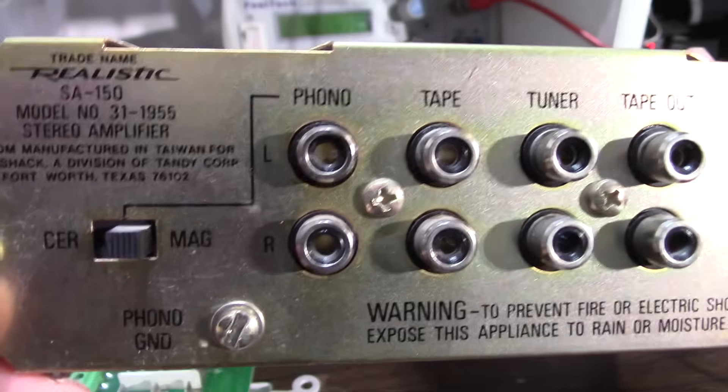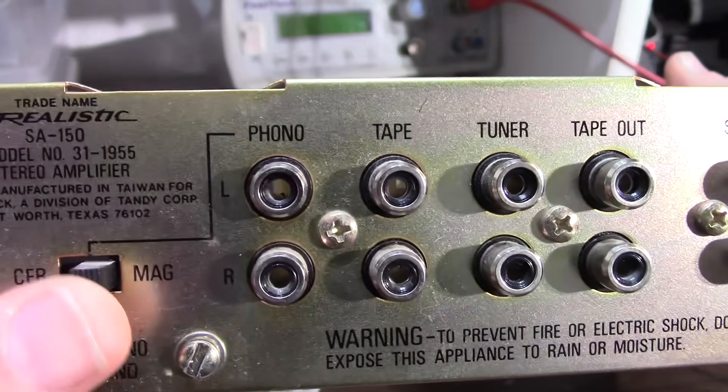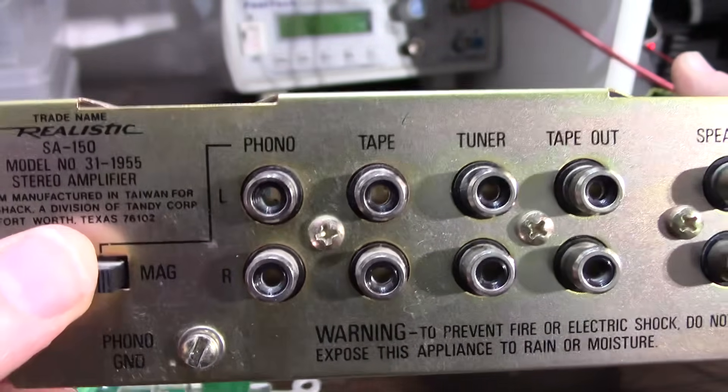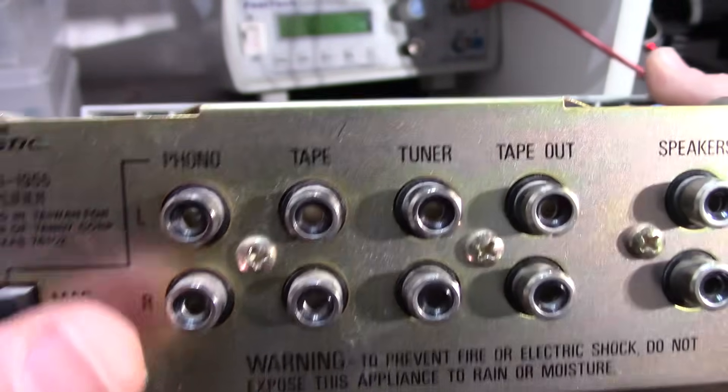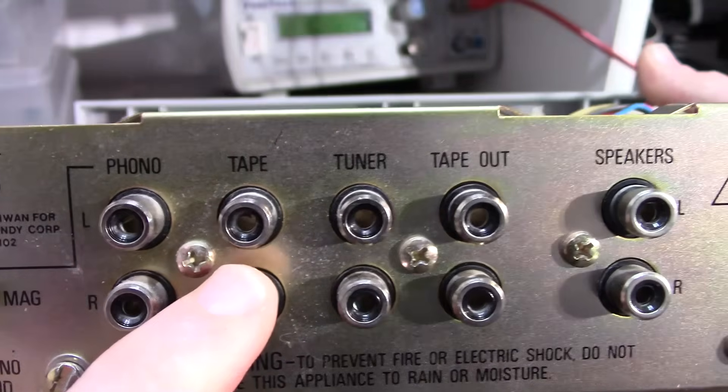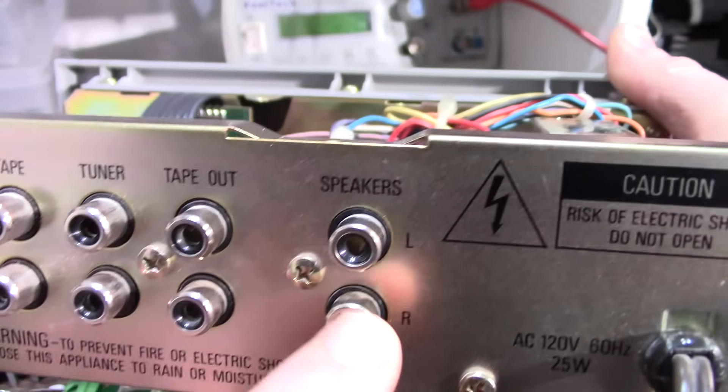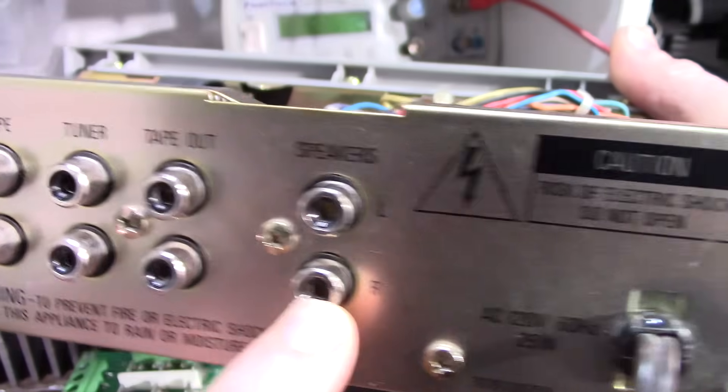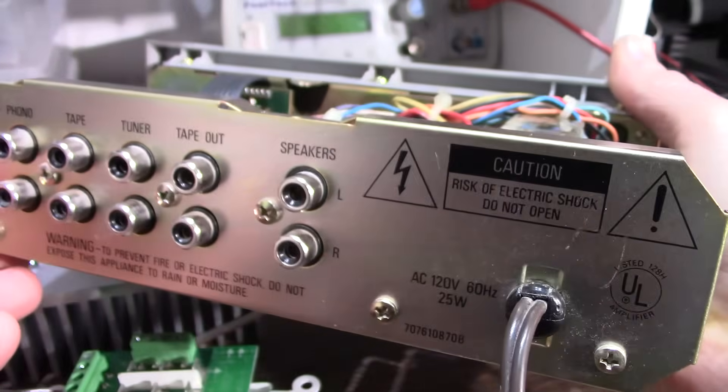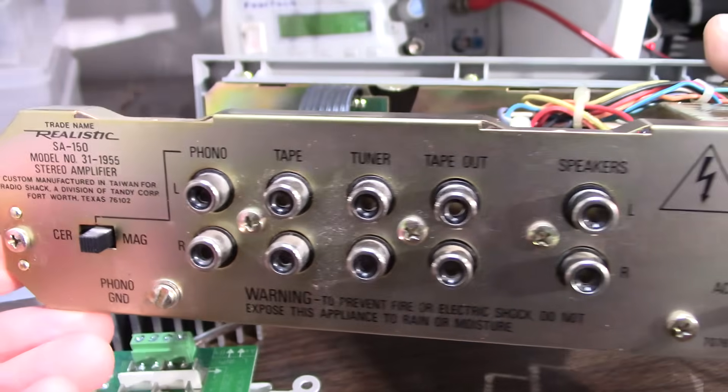So looking at the back of the unit, this allows you to switch between a ceramic or magnetic cartridge and your phono input. You have your tape, tuner, tape out. And they're using RCA connectors for the speakers, which is common on lower priced stereo equipment back in the day.